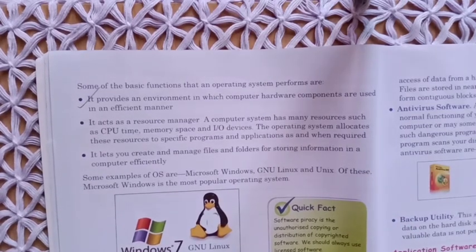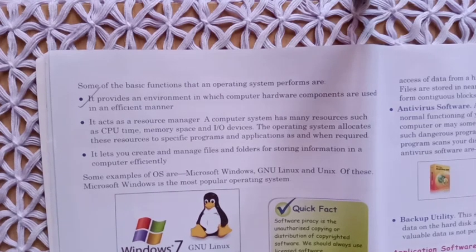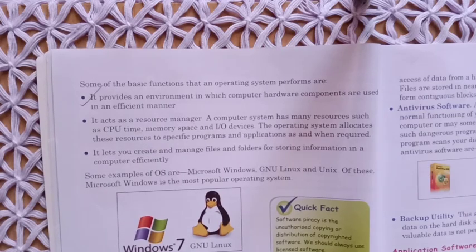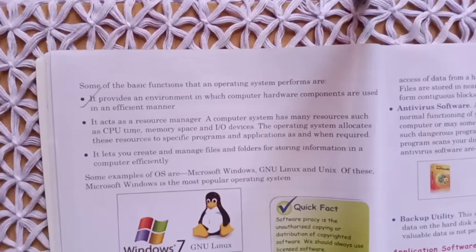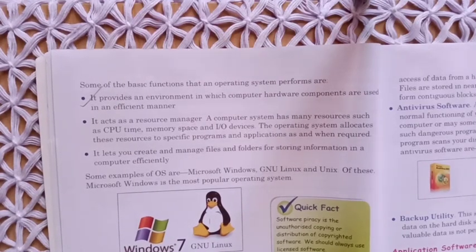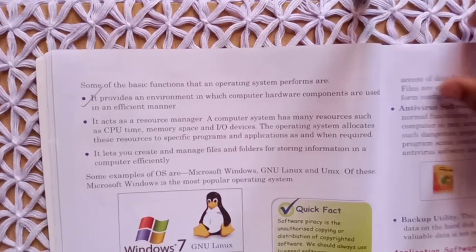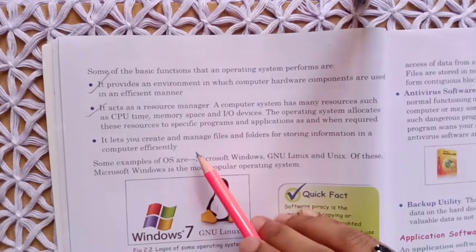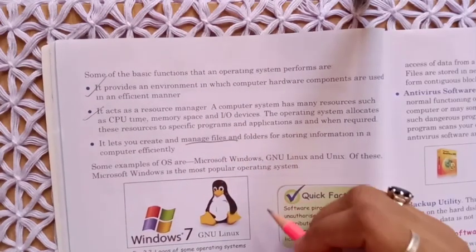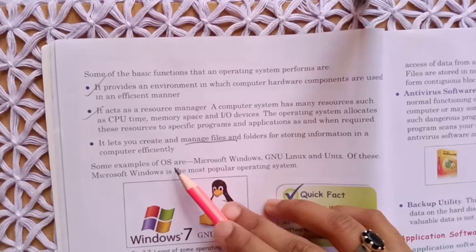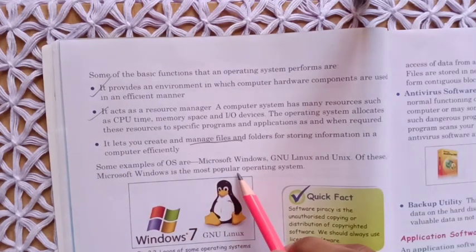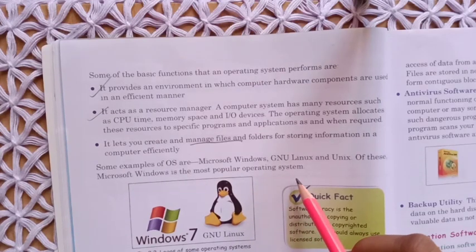The operating system allocates resources to specific programs and applications as and when required. For example, if you want to do typing or create a presentation, the operating system will show you the related application. It also helps manage hardware devices and lets you create and manage files and folders for storing information efficiently. Examples of OS are Microsoft Windows, GNU Linux, and Unix — of these, Microsoft Windows is the most popular.